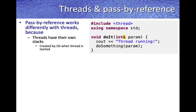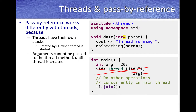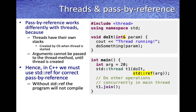For example, let's say we have the do_it method which takes the argument param by reference. When you create the thread — say thread t1 to run the do_it method and pass arg as the argument — and we want to do pass by reference, this operation is incorrect. Arguments cannot be passed to the thread directly because the stack doesn't exist until the thread is created. In C++, the API requires us to use an extra method called std::ref in order to correctly do pass by reference with threads. You should create the thread by using std::ref around the arguments you want to pass by reference, and without std::ref, your program will most likely not even compile on modern compilers.